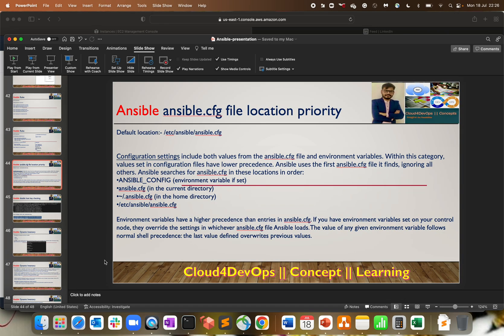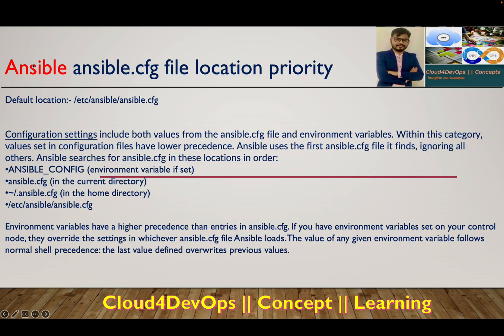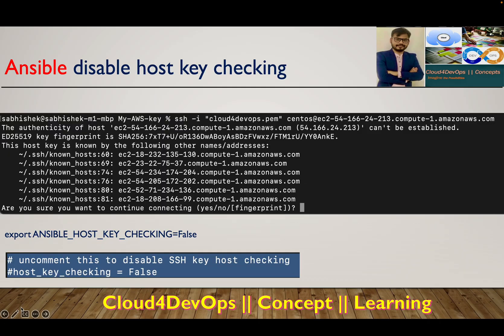Try out the practical work by yourself — this is very simple. This is also a common interview question: if you have multiple locations, which location gives priority for the config file? Now the next concept is another interview question and a production-based scenario: how to disable host key checking.